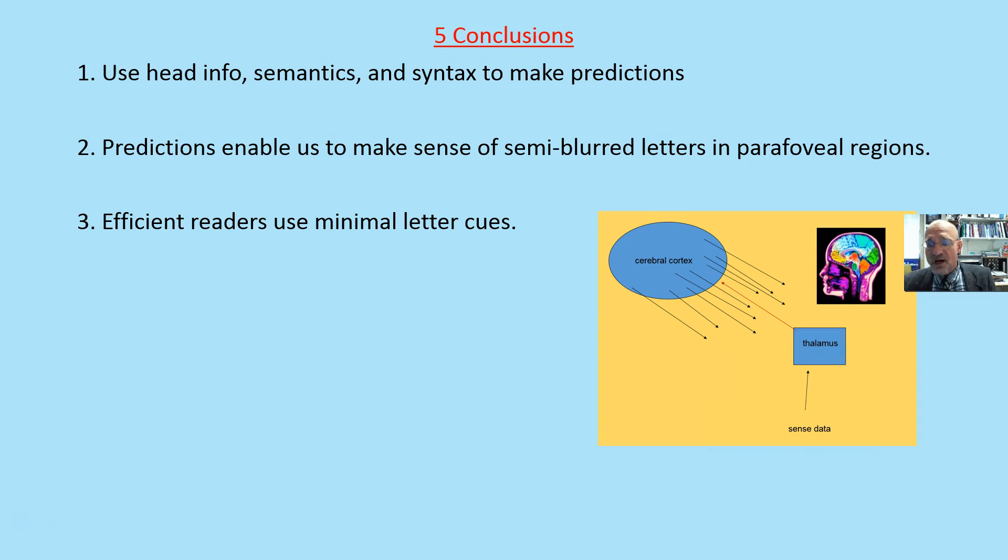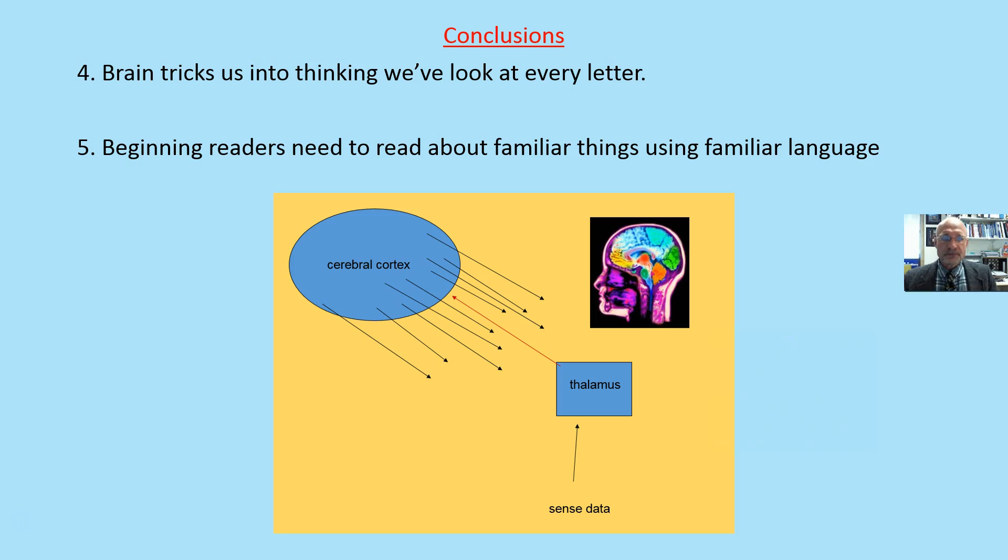So what are we to conclude? We use what's in the head, along with semantics and syntax, to make predictions as we're reading. Predictions enable us to make sense of the semi-blurred letters in the parafoveal regions. Efficient readers do not read letter by letter, word by word. They use minimal letter cues. And again, the brain tricks us into thinking we've looked at every letter and every word, but that's not the case.